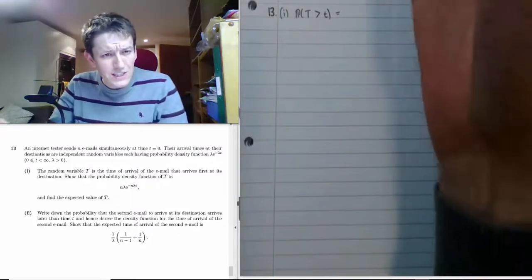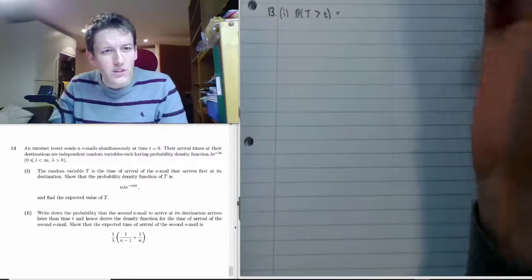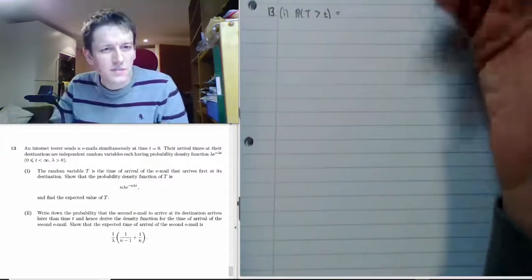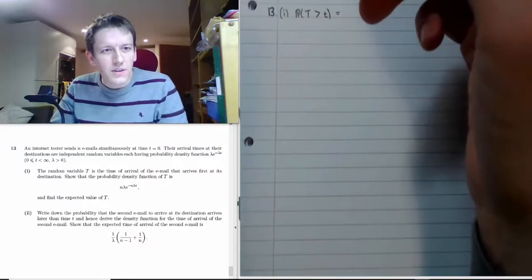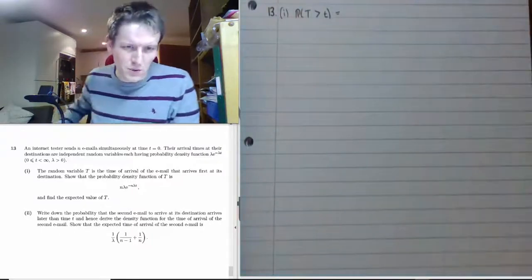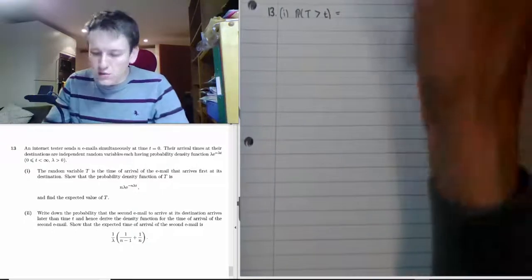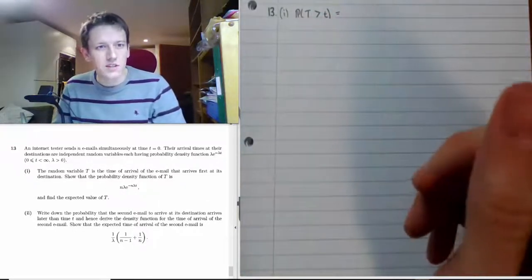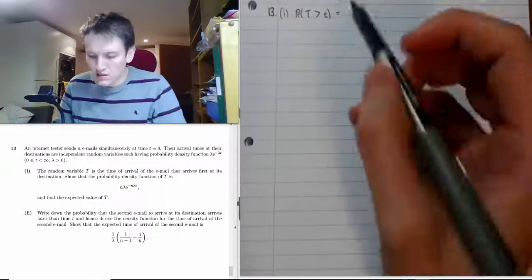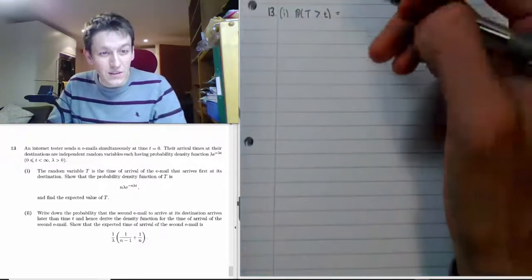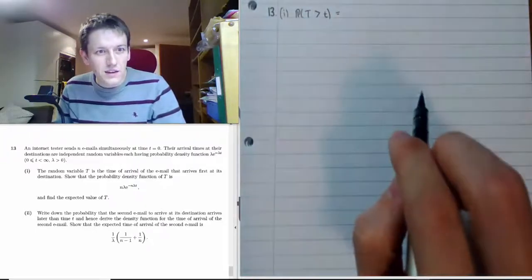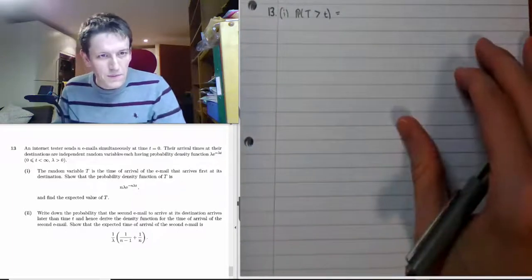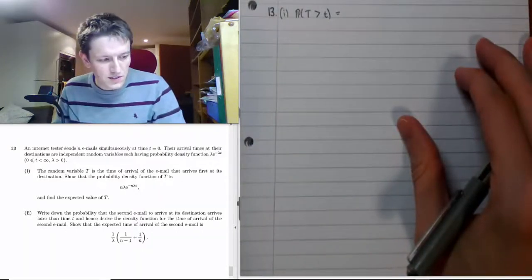For a question like this, it's quite hard to work out the probability that the first email arrives before some value directly, because we don't know which email is going to be the first one to arrive. But it's easier to work with the probability that the first arrival time is larger than a certain value t, because that means none of them arrive before t — all arrivals have to happen after t.